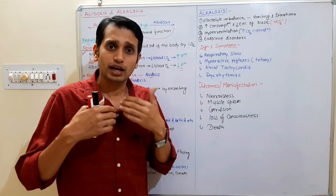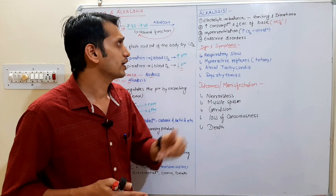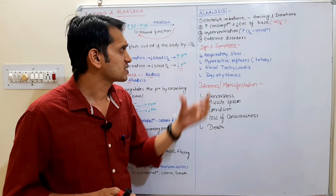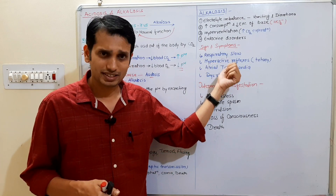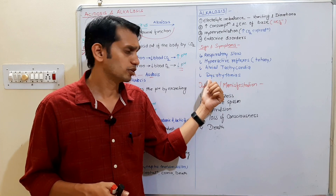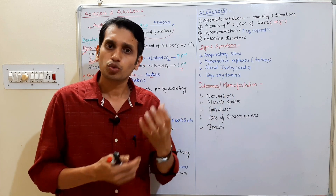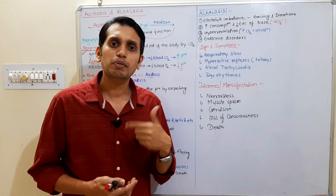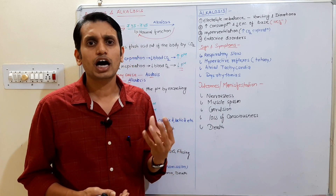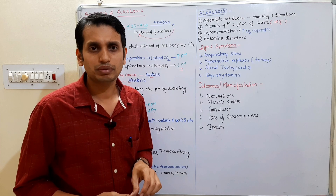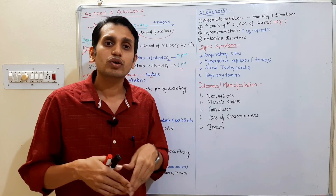If hyperventilation is occurring in your body, or you are taking in a high amount of oxygen and exhaling CO2, then your blood pH can rise. Endocrine disorders are also a cause. Signs and symptoms of alkalosis include: respiratory slowing or respiratory depression, hyperactive reflexes like tetany, atrial tachycardia, and dysrhythmia — meaning loss of rhythm in the heartbeat, where the heart beats at a highly irregular or elevated rate.